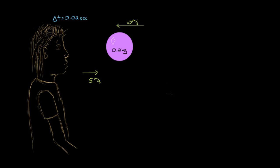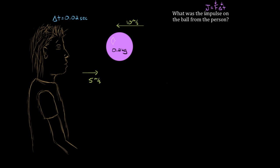Knowing this information, we can ask all kinds of questions. One of them is: what was the impulse on the ball from the person? The definition of impulse — we use the letter J for impulse, which always seemed a little weird to me since there's no J in impulse. I end up calling it 'jimpulse' just so I can remember that it's impulse and there's a J for it. So the impulse is defined to be the force acting on the object multiplied by the time duration during which that force is acting. If we knew the force on this ball, we could use this formula to get the impulse, but we don't — I don't know the force that this person's face is exerting on the ball, so I can't use this formula to solve for the impulse.